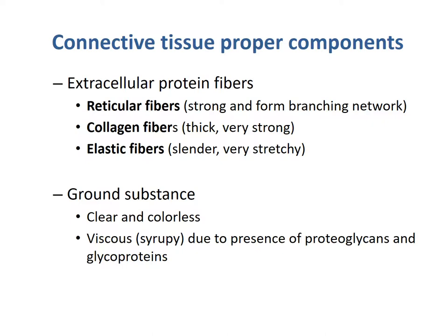When looking at connective tissue proper, the different types of fibers determine its overall strength and type. The first type is reticular fiber — strong, forming a branching network providing structural support for organs. Collagen fibers are thick and very strong, found a lot in the skin maintaining its overall structure. Elastic fibers are slender and very stretchy, allowing things to morph and change shape but then return to their original shape. The ground substance of connective tissue proper is clear and colorless, viscous and syrupy due to the presence of proteoglycans and glycoproteins.